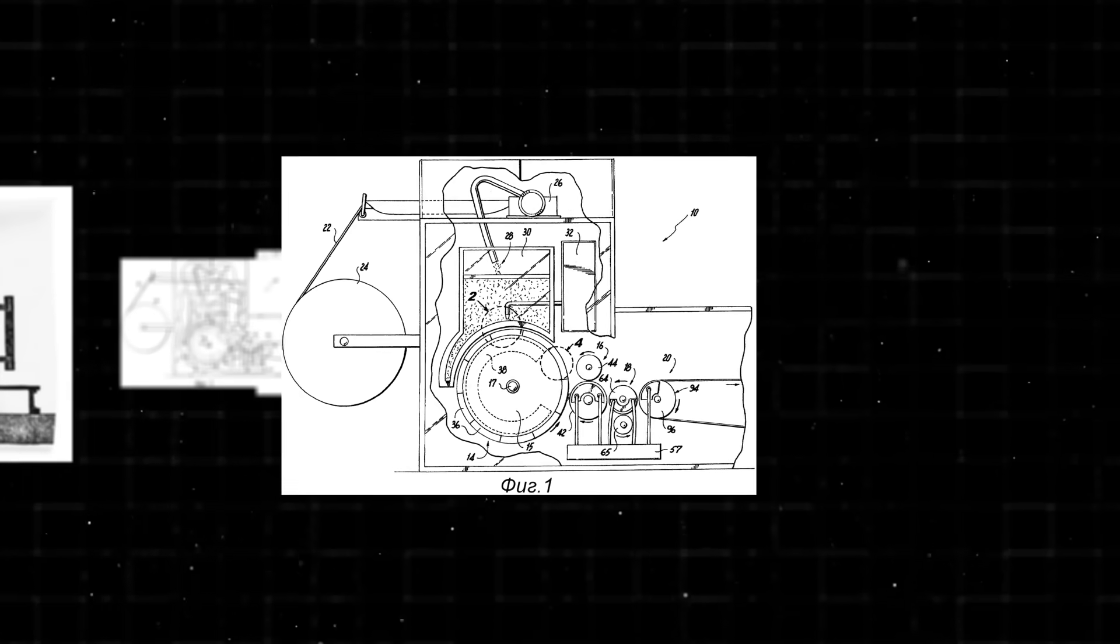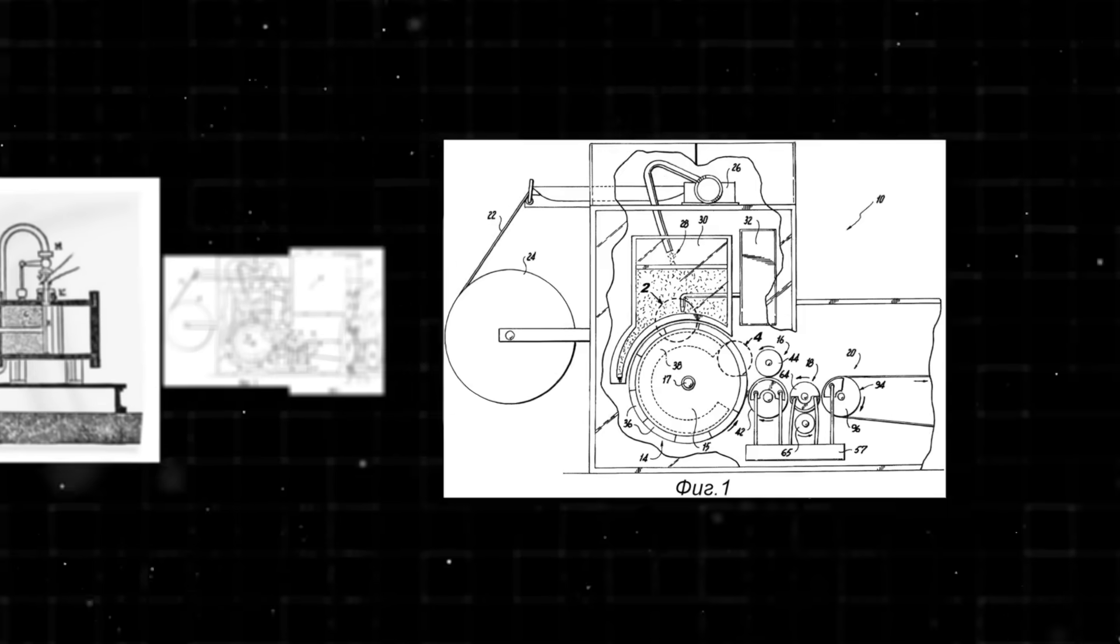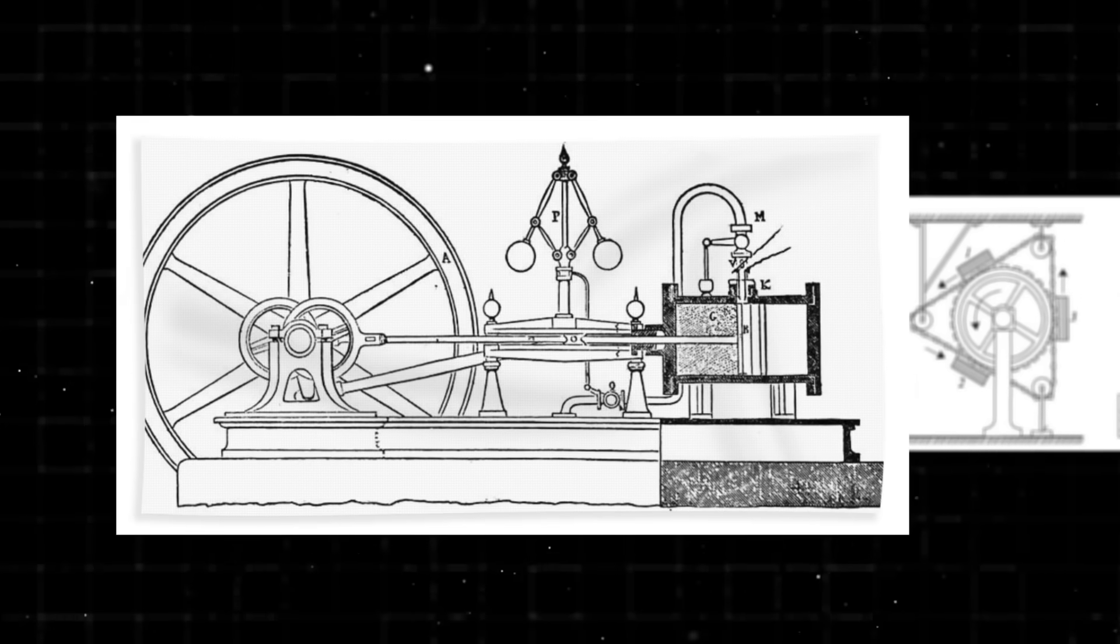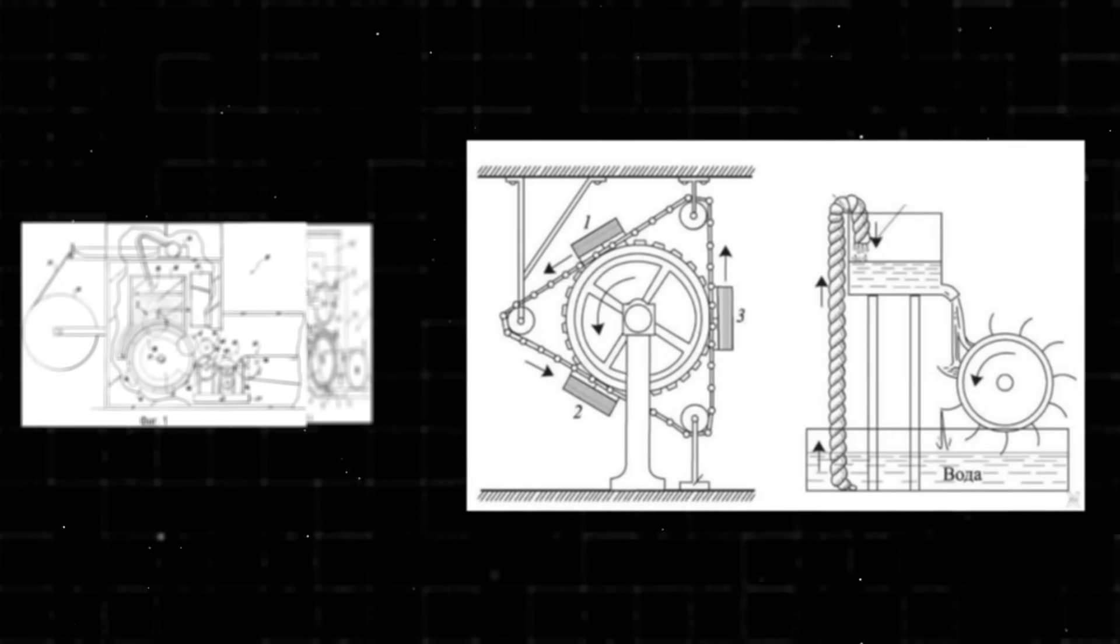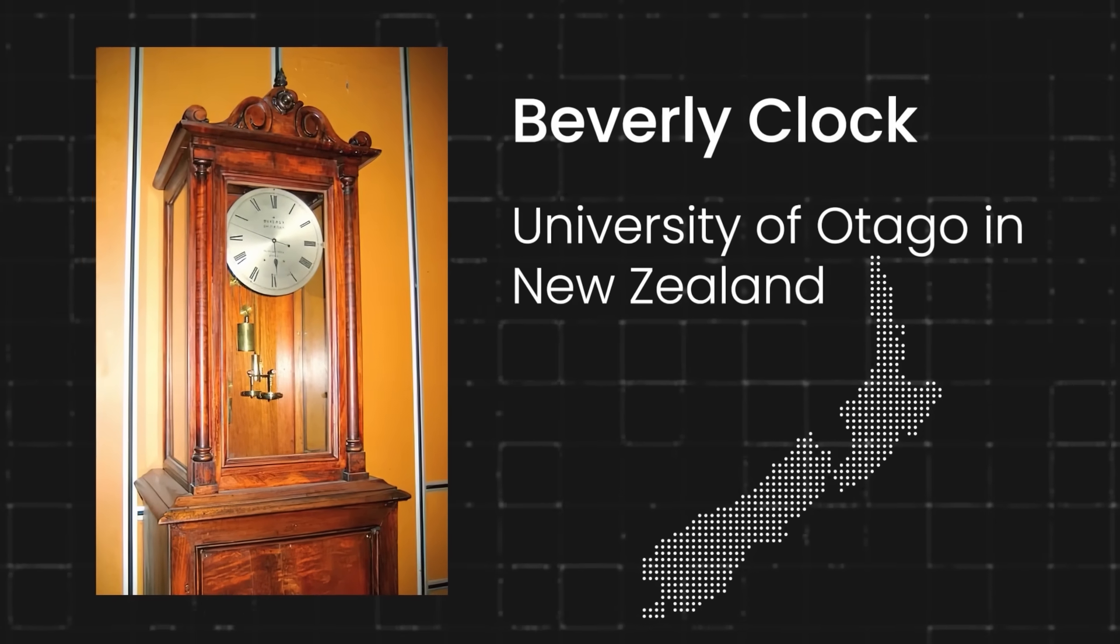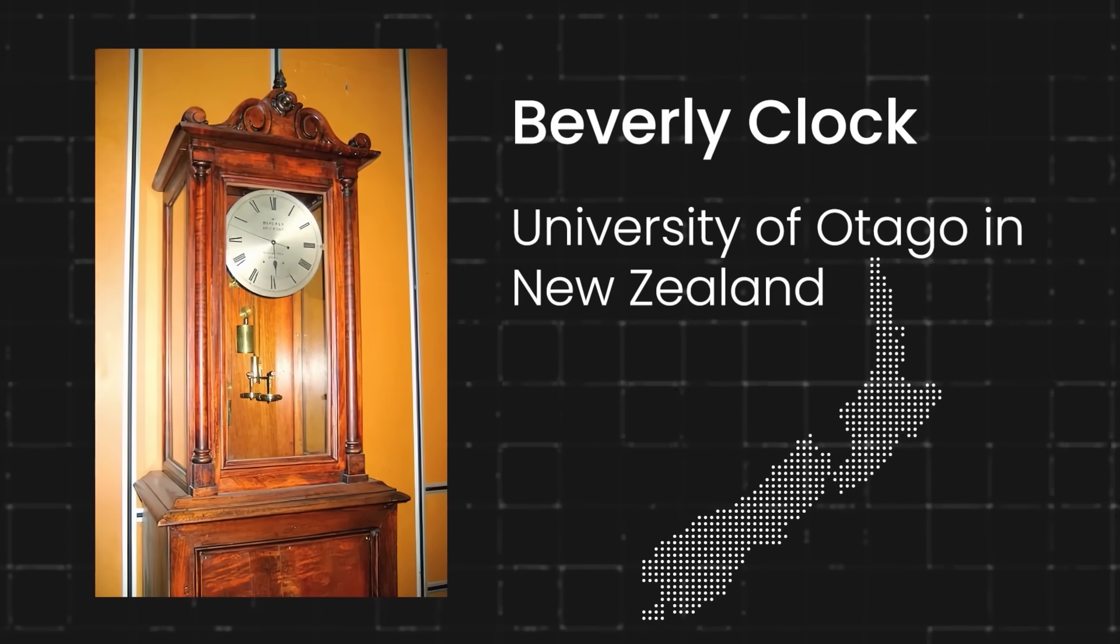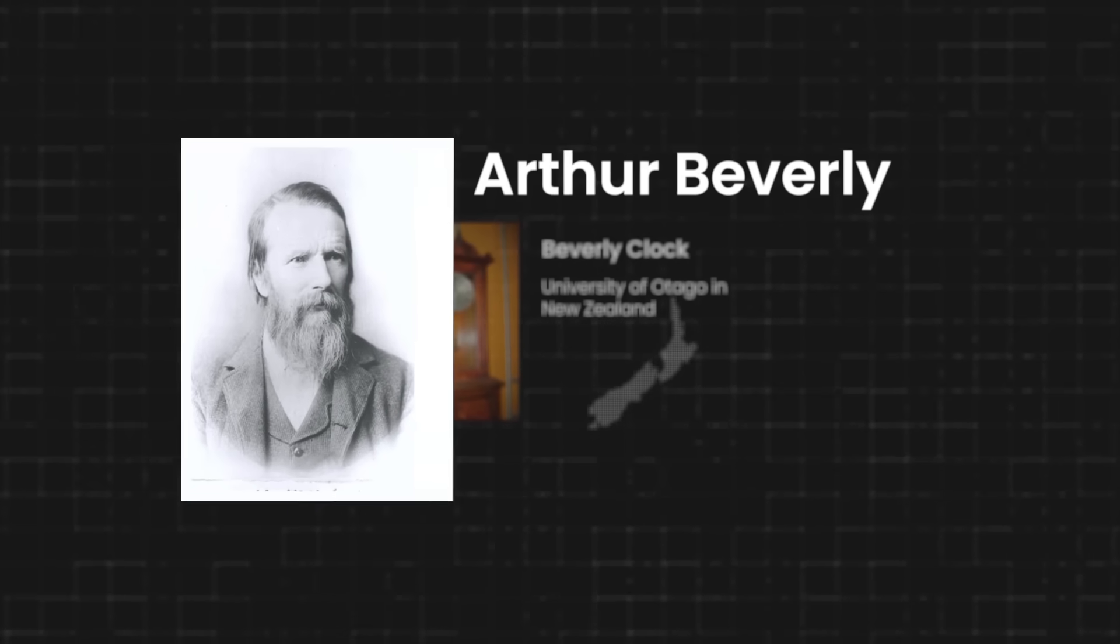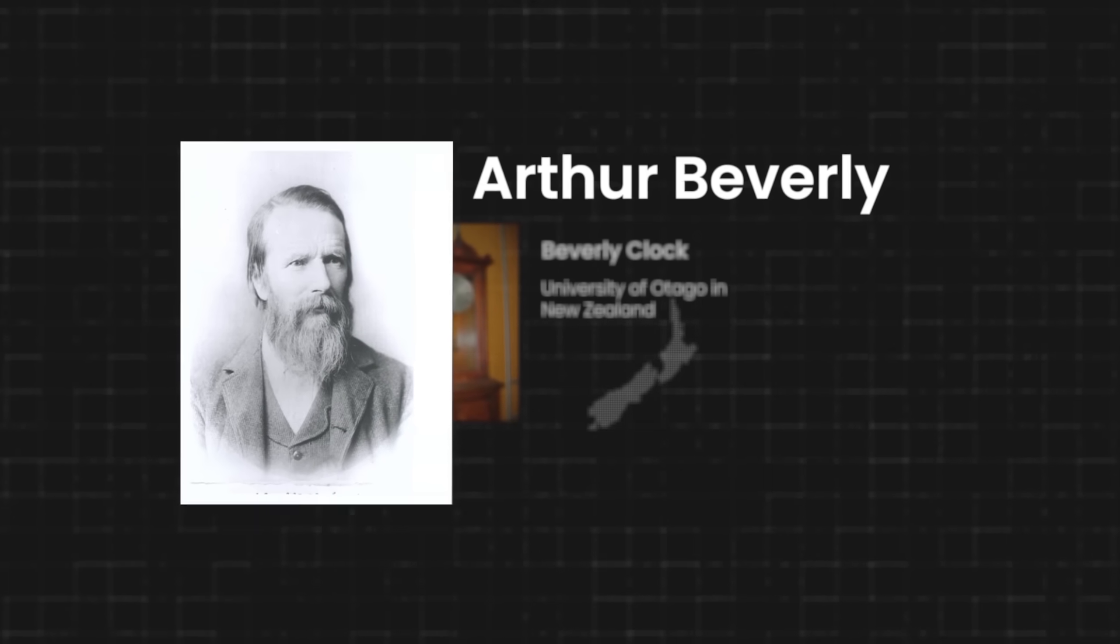However, there are a few inventions out there that we're going to look at that are what many would call the most impressive attempts at building a perpetual motion machine. The Beverly clock is one of those inventions. It sits inside the Department of Physics at the University of Otago in New Zealand.